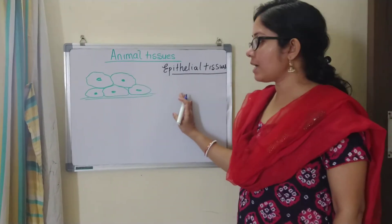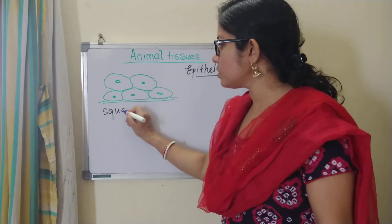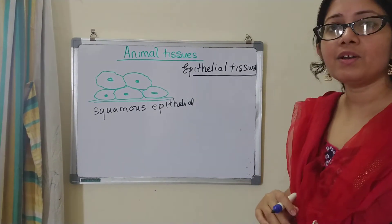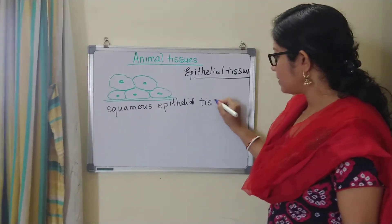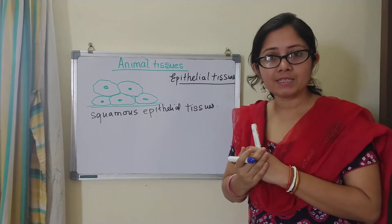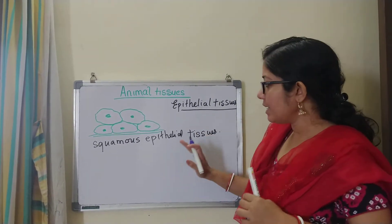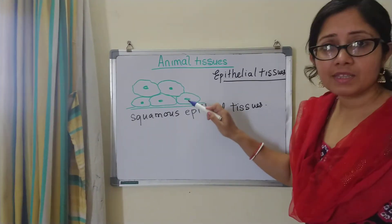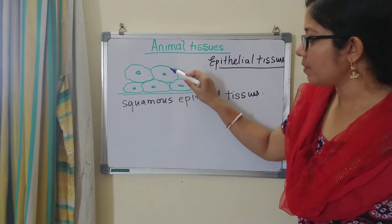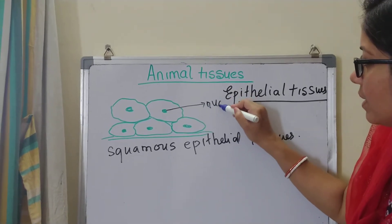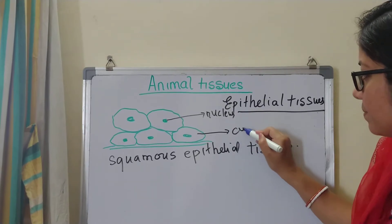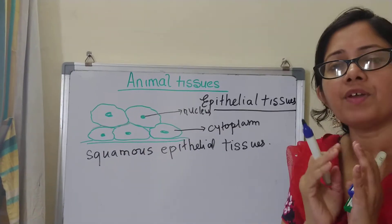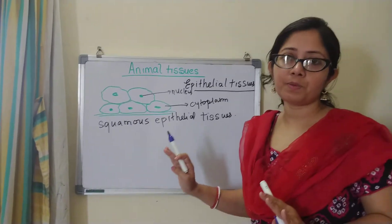Now, epithelial tissues are of many types. The first one we are going to learn is the squamous epithelium. The squamous epithelial tissues are those that are present as the outer layer of my skin. They are very flat and very thin cells, kind of irregular with a nucleus inside — this is the nucleus and this is the cytoplasm. These cells are very closely packed with no intercellular space almost.